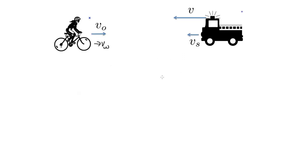OK, so we've sketched our situation. Now, if there was no wind, the frequency observed by the observer would be given by V plus the velocity of the observer over V minus the velocity of the source. But there is a wind.